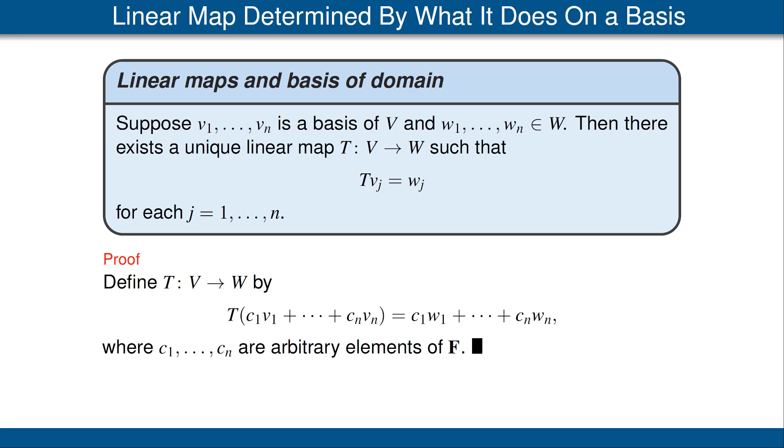The function T shown here is the only linear map from V to W such that T(v_j) is equal to w_j for each j. This definition is forced upon us by the conditions of additivity and homogeneity.